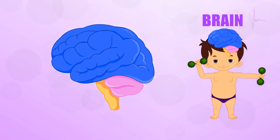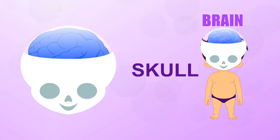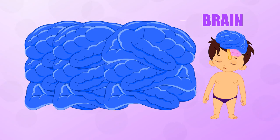Your brain triples in weight between birth and adulthood. As it grows, it wrinkles up to fit your skull, which acts like a protective crash helmet. If you could stretch it out, your brain would cover an ironing board.